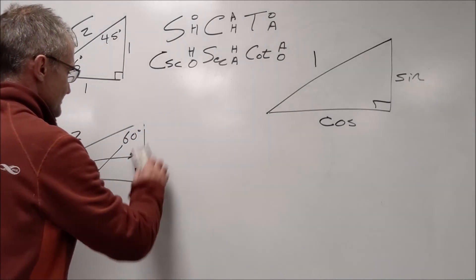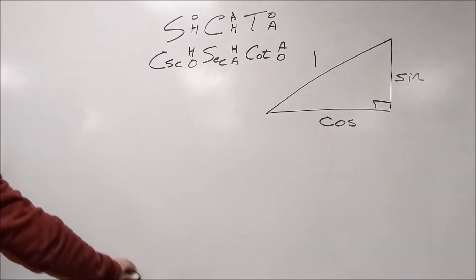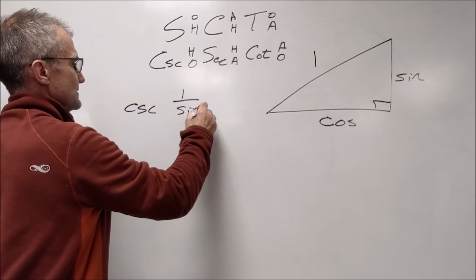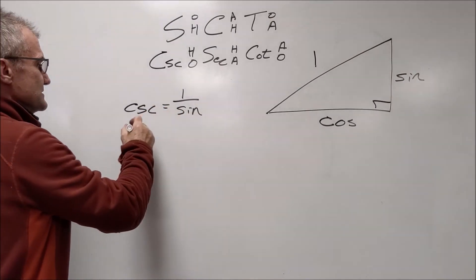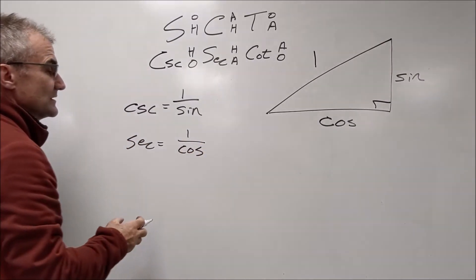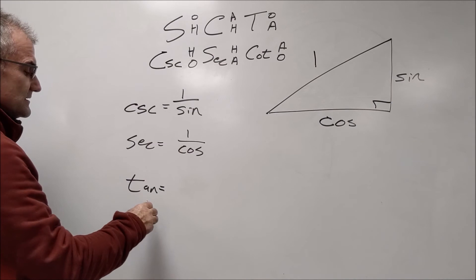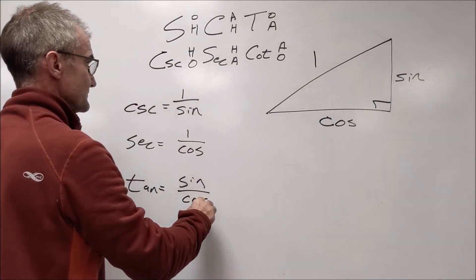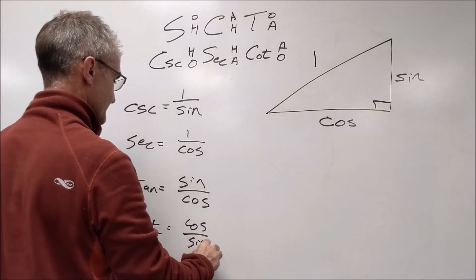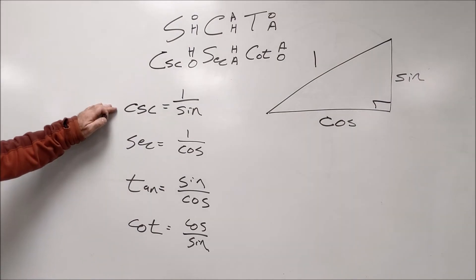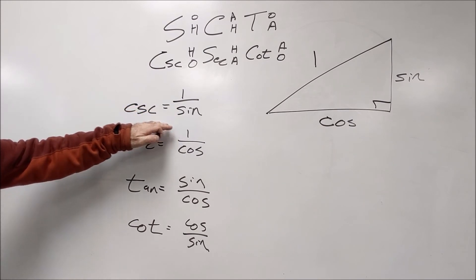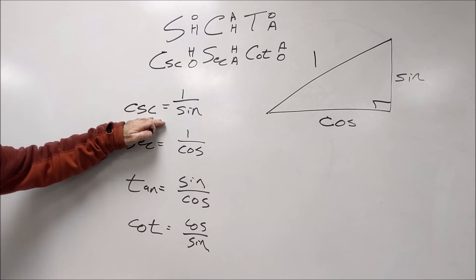So I could define my first reciprocal identities. Cosecant is equal to the hypotenuse over the opposite, which is sine. So cosecant is equal to 1 over sine. Secant is equal to the hypotenuse over the adjacent, which is cosine. Here are the two quotient identities. Tangent is equal to sine over cosine. And cotangent is equal to cosine over sine. So those are your quotient identities. These are your reciprocal. You can write these a lot of different ways. Sine is equal to 1 over cosecant. Tangent equals 1 over cotangent. Cotangent equals 1 over tangent.